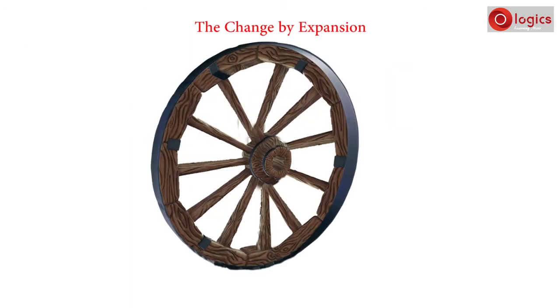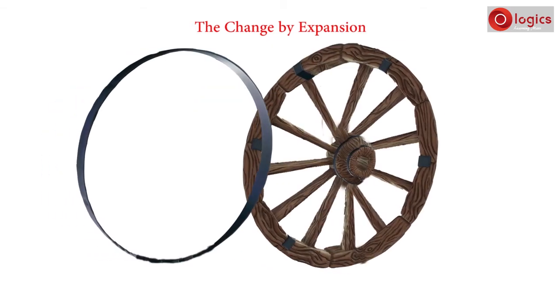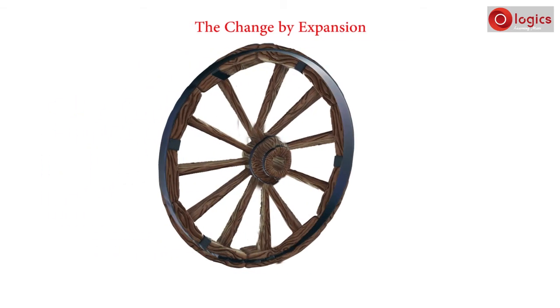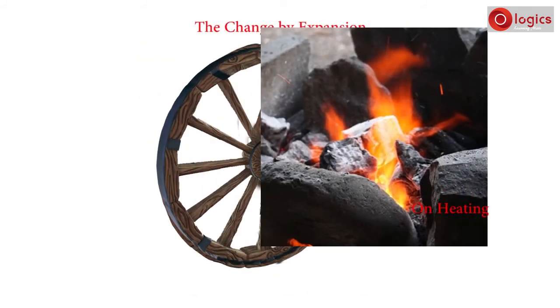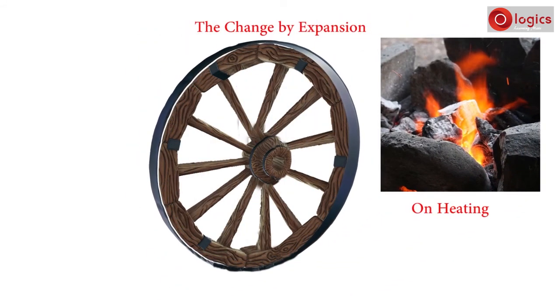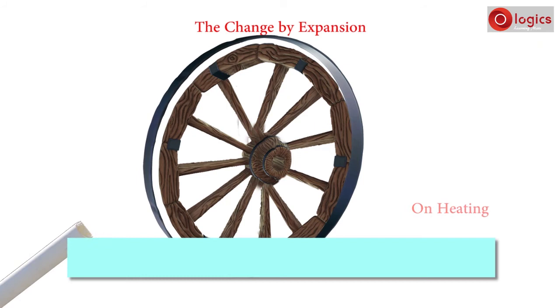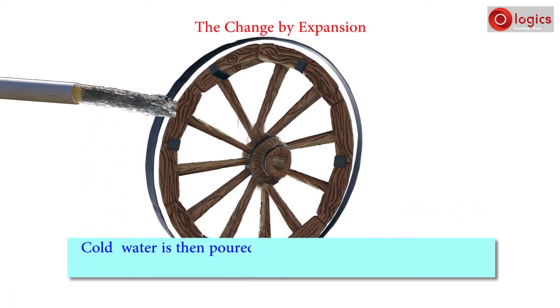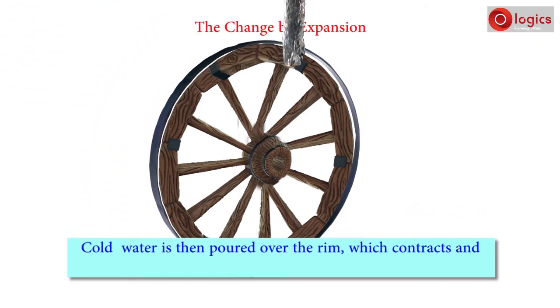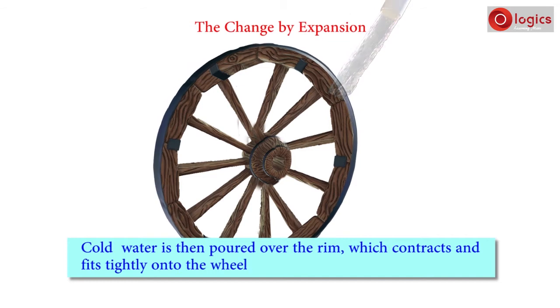The change of expansion and contraction can also be used for fixing the metal rim on a wooden wheel of a cart. This metal rim is made slightly smaller than the wooden wheel. On heating, the rim expands and fits onto the wheel. Cold water is then poured over the rim, which contracts and fits tightly onto the wheel.